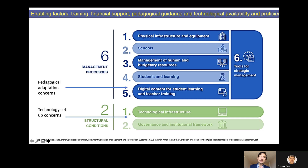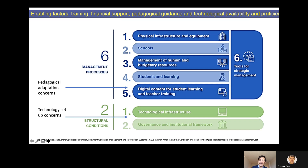There are a number of key components to make blended learning happen. Some enabling conditions relate to physical infrastructure — the role of the school, how administrators and managers will provide conditions for success, what is expected from students in terms of their learning, and to what extent the content provided will facilitate the blended learning experience. There are also structural conditions like infrastructure and governance.